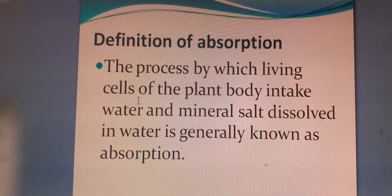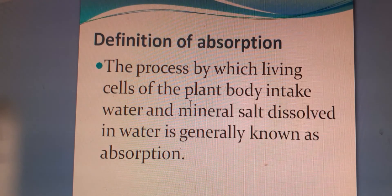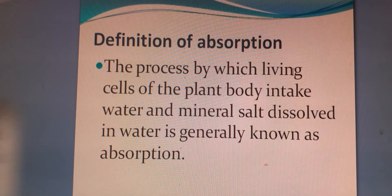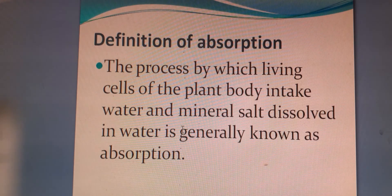Definition of absorption: The process by which living cells of the plant body intake water and mineral salt dissolved in water is generally known as absorption. Plant cannot take water by the living cell directly. Plant first absorbs water by root hair through osmosis, and then water flows from one cell to another through osmosis. Plant cannot intake mineral salt directly — it always intakes mineral salt in the form of ions, dissolved in water, through osmosis by the root hair.